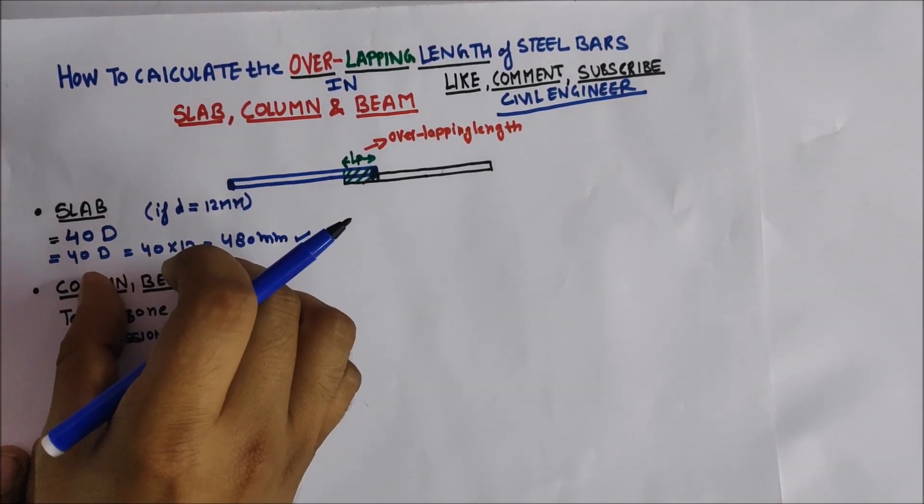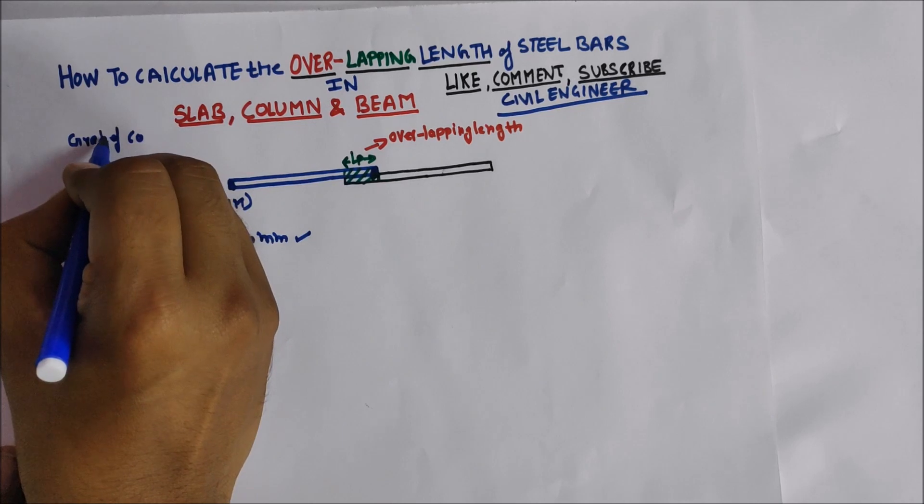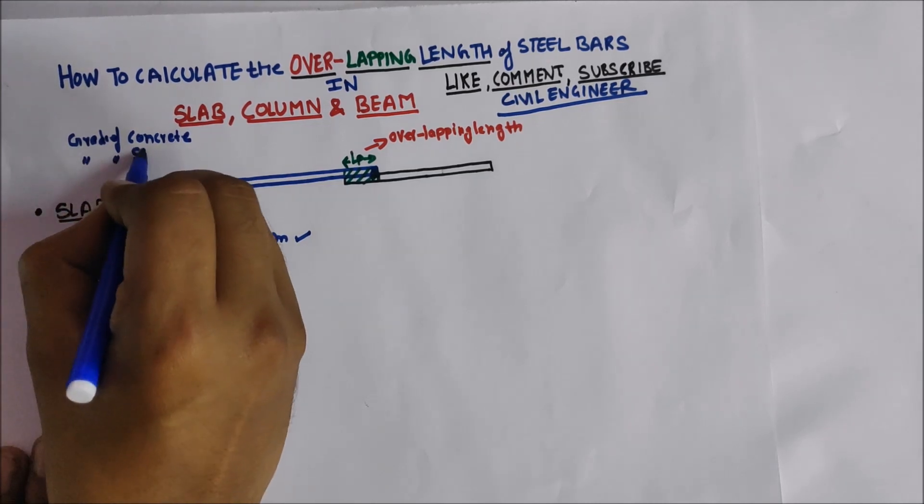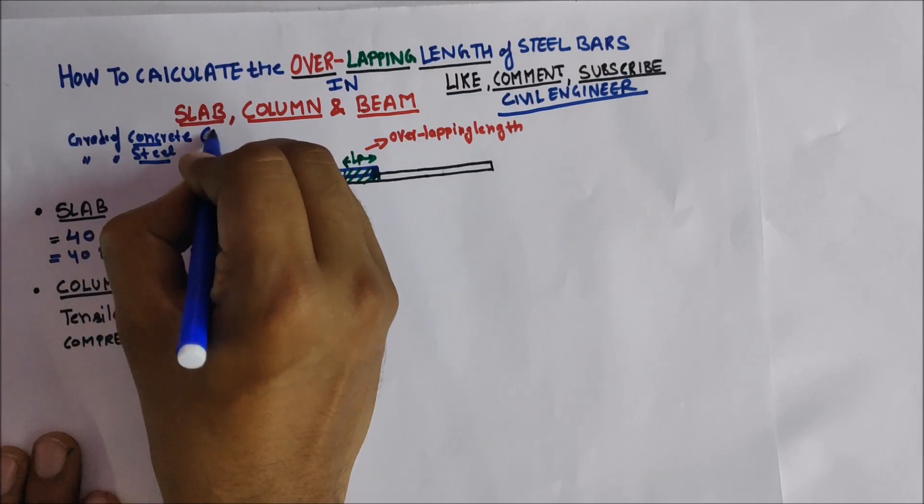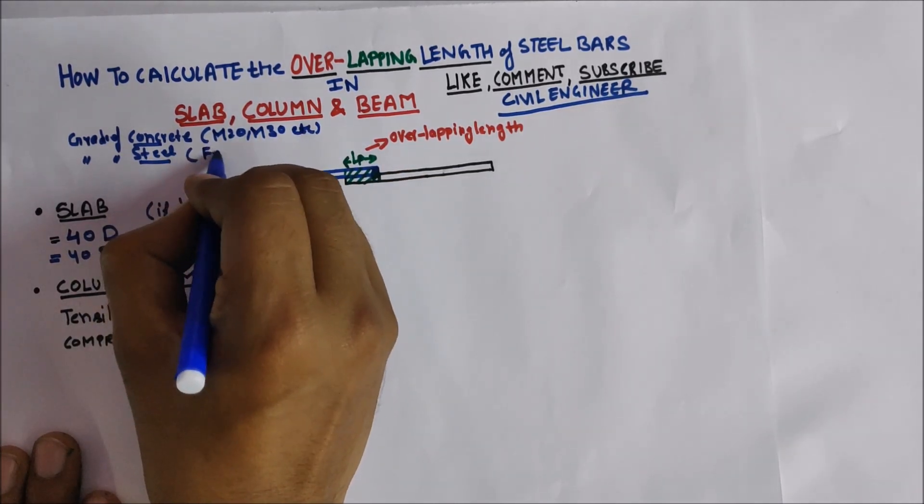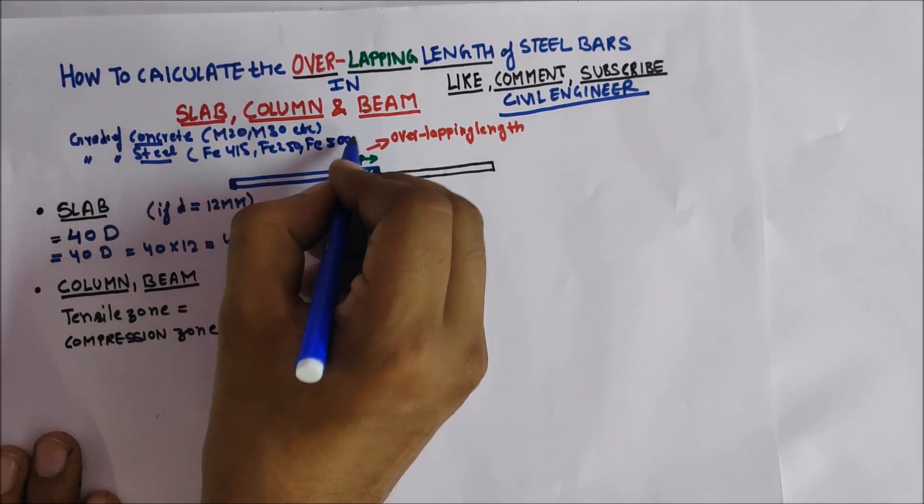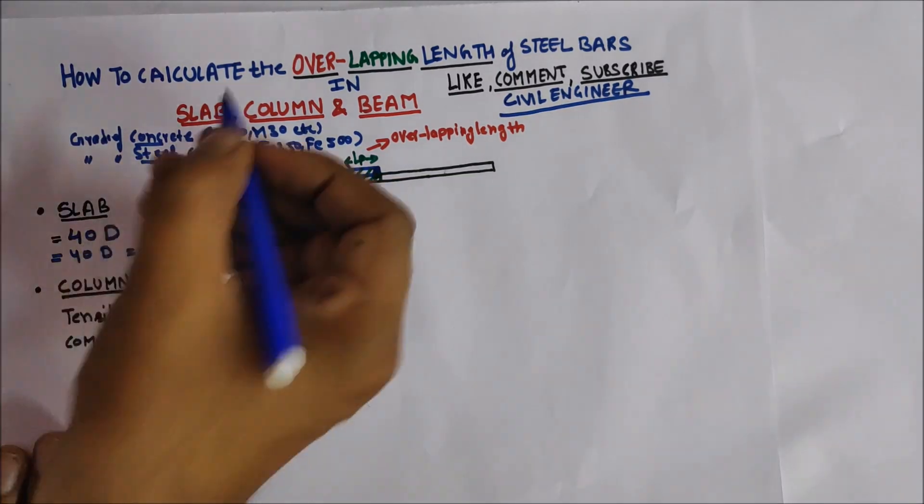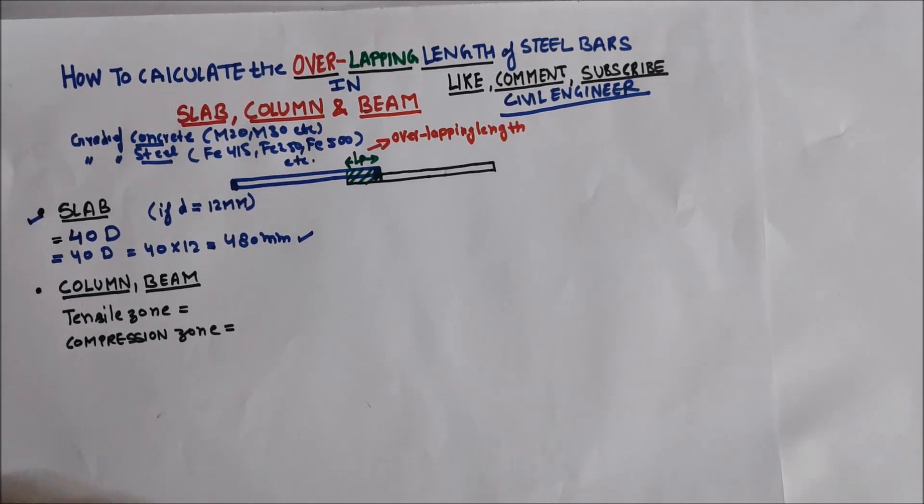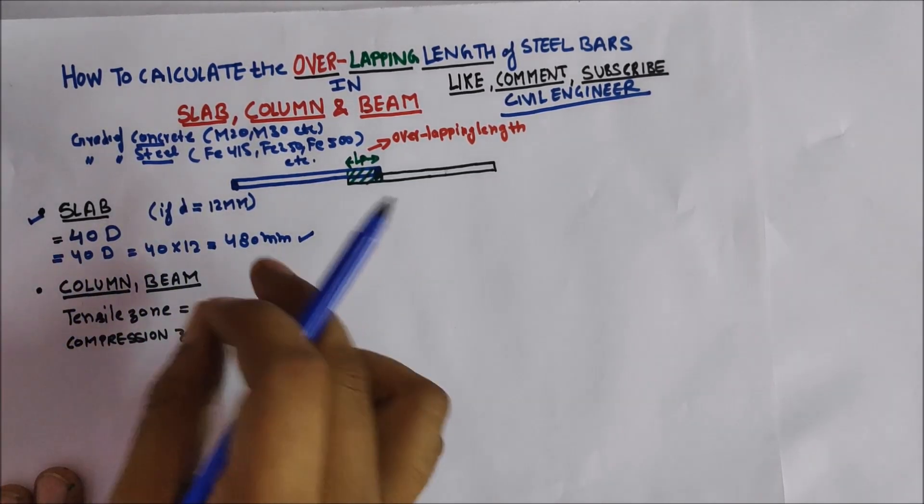Overlapping length also depends upon the grade of concrete and the grade of steel, like M20 or M30, and mild steel Fe 250 or Fe 500. Generally, we are talking about slab, beam, and column we use in site areas. So for slab we take as 40D, if we are taking 12mm steel bars, the overlapping will be 480mm.